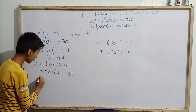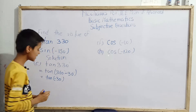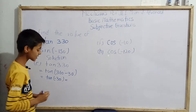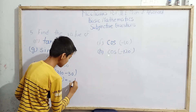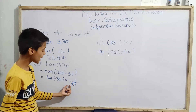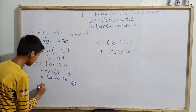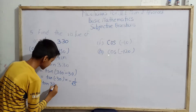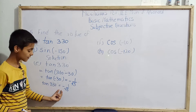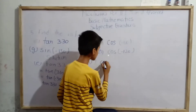Evaluating tan(360° - 30°): since tan 360° equals zero, this simplifies to tan(-30°). We know tan 30° = 1/√3, so tan(-30°) = -1/√3. Therefore, tan 330° = -1/√3. That is the answer for part e.